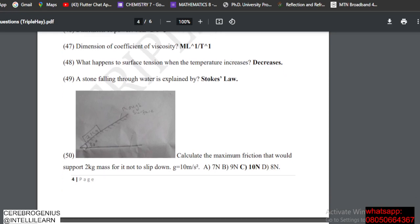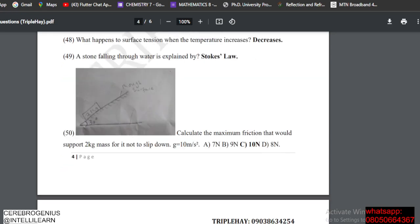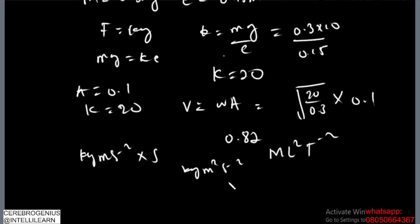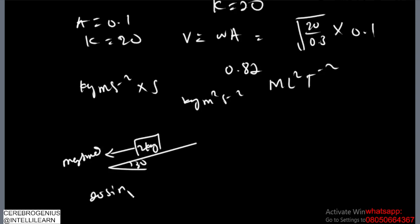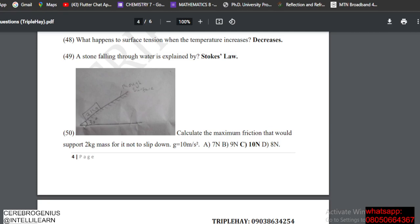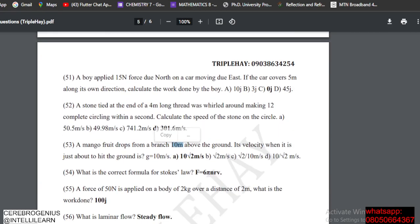This is a rough surface, so calculate the maximum friction that will support a 2 kg mass not to slip down. The angle is 30°, the mass is 2 kg. The force trying to bring it down is mg sin θ — that's 20 sin 30° — which equals the frictional force. The answer is 10 newtons.